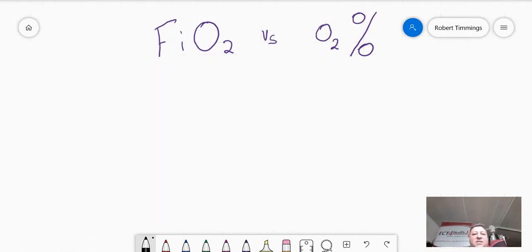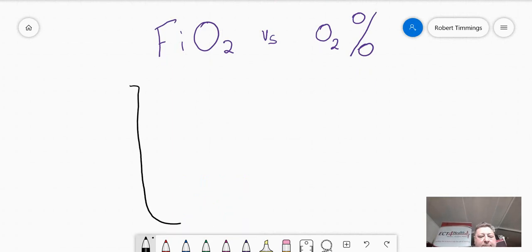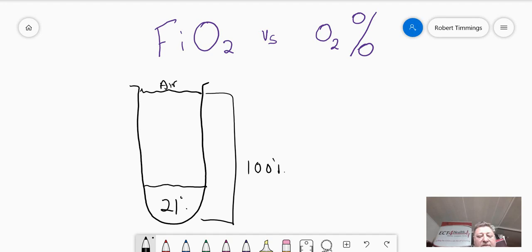The percentage of oxygen is the amount of oxygen in the air that you're breathing. Let's briefly understand the concept that air is a mixed gas. If I was to fill up this container with air, inside that air which makes up 100% of that container, it's a combination of a mixture of gases. 21% of that air is oxygen.